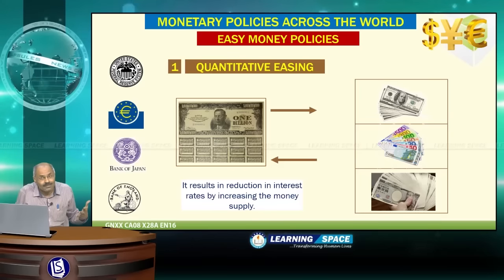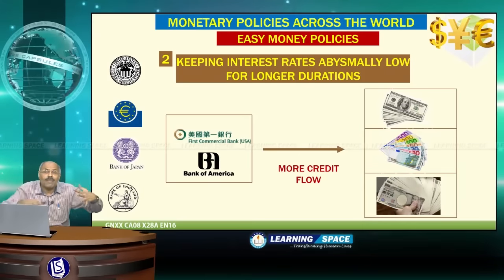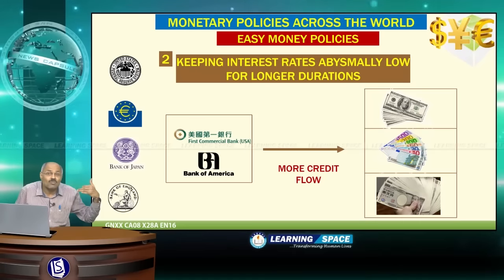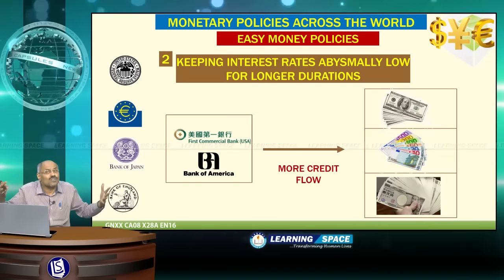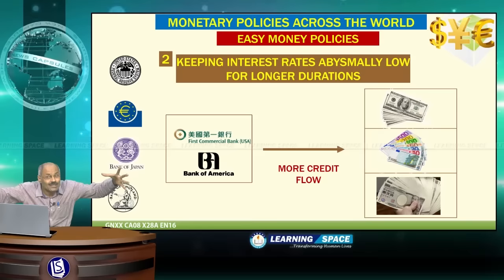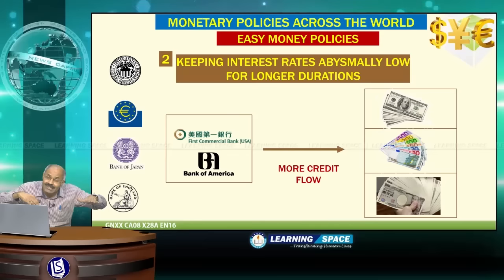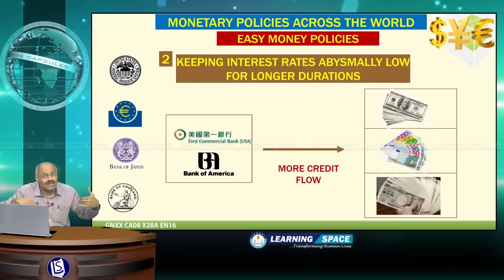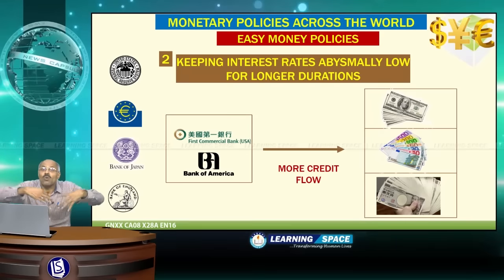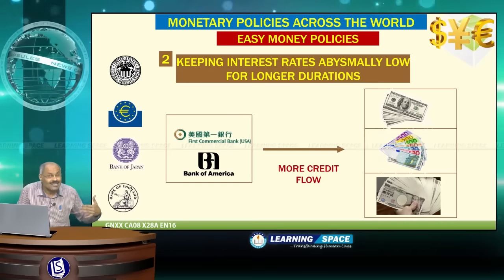Another tool used by central banks is keeping benchmark interest rates abysmally low for longer durations. Some central banks are keeping benchmark interest rates as low as 0.25% to 0.5%, with the expectation of generating more credit flow. Advanced economies have maintained these abysmally low interest rates for several years with a view to stimulating greater credit flow.